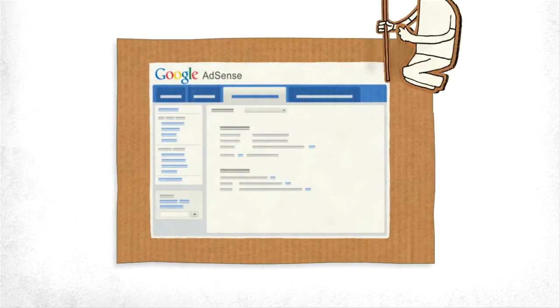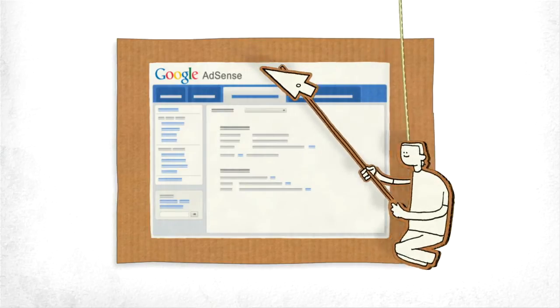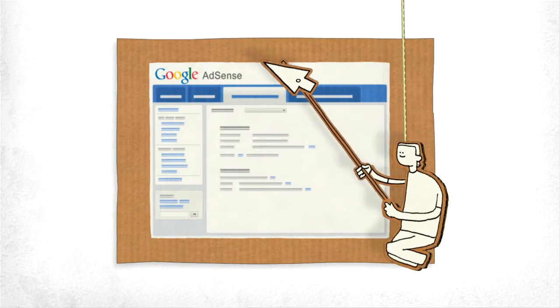To help you take advantage of AdSense features we think you'll find helpful, we've grouped related ones together. For instance, we put all the ad controls, including our revamped ad review center, in one place, under the Allow and Block Ads tab.